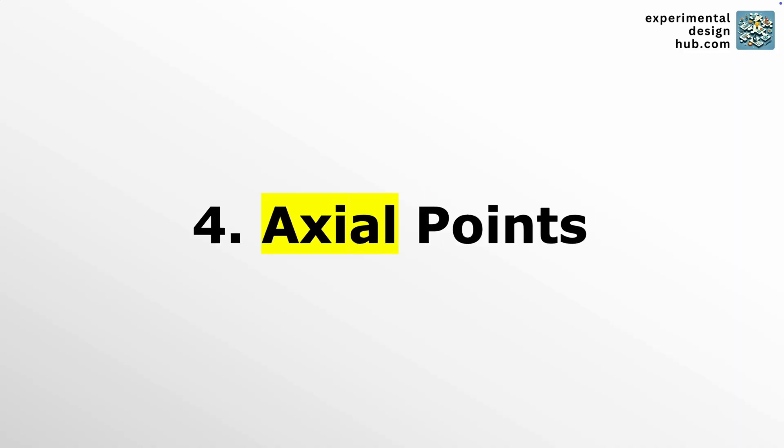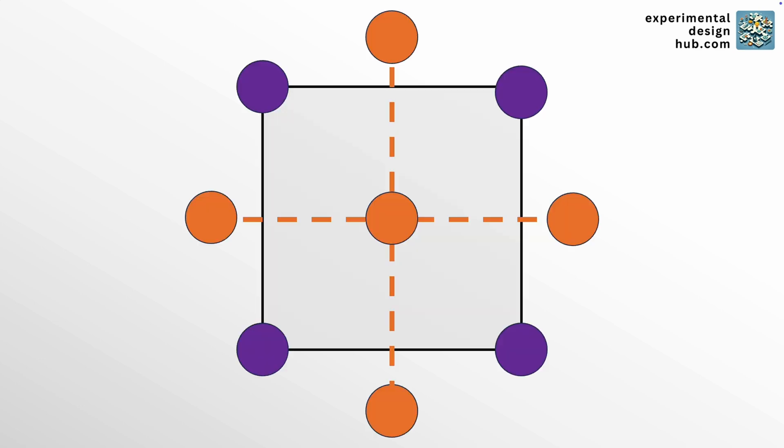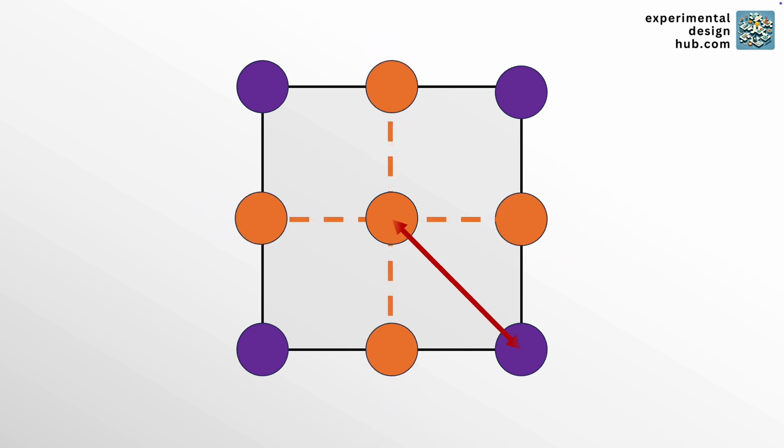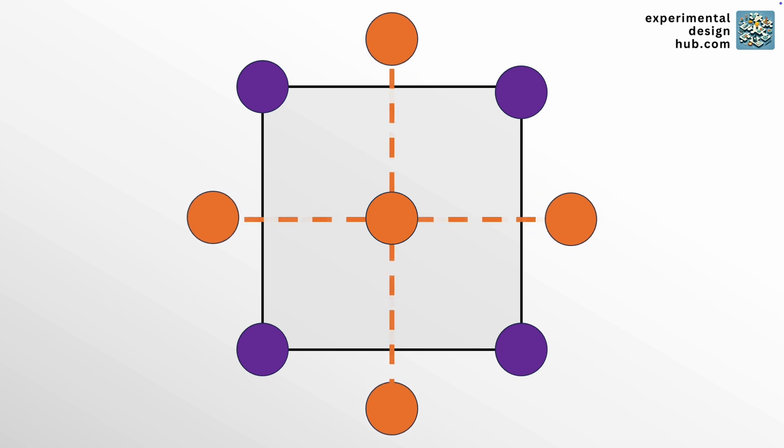Now, you might have noticed that the axial points extend outside the factorial square. And the reason for this is rather simple, because if you would put them on the edges of the square, the axial points have a different distance from the center as the factorial design points. And this inequality would lead to less reliable predictions in some regions compared to others. You avoid that by putting the axial points and factorial points at the same distance from the center. And a design like this, when axial points and factorial points have the same distance from the center, then the design is called rotatable.